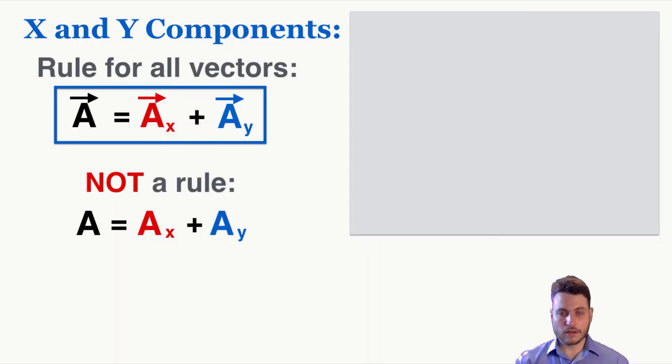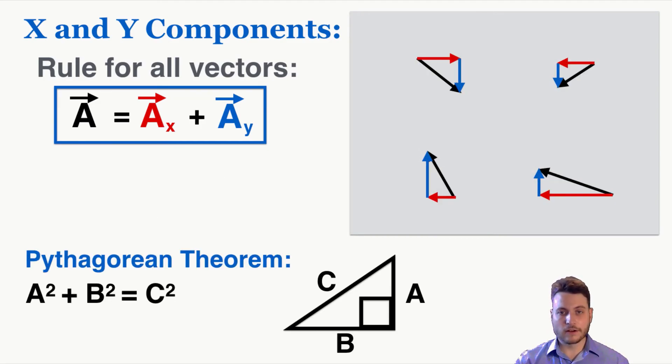You may have noticed, however, that no matter how we draw vectors, their x and y components always form perfect right triangles with them when we draw them. Because the x and y components are by definition at 90 degree angles to each other. So because of the Pythagorean theorem, that means that the x and y components will always be related to the full vector using the Pythagorean theorem, a squared plus b squared equals c squared. So this will always be true.